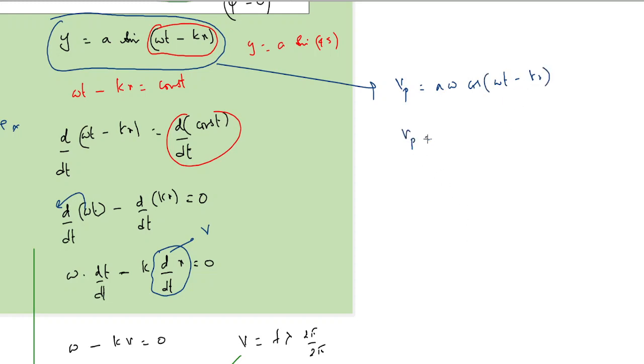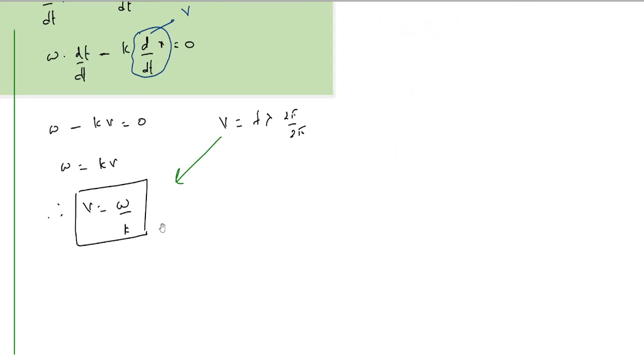Or the particle velocity vp is equal to A into omega. If we solve it, what you get from here would be, if you write cosine in terms of sine and solve it, we get omega into square root of A squared minus y squared. So this is the particle velocity and that is the wave velocity.